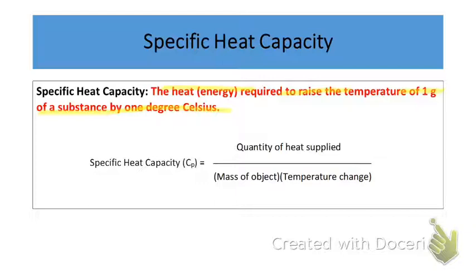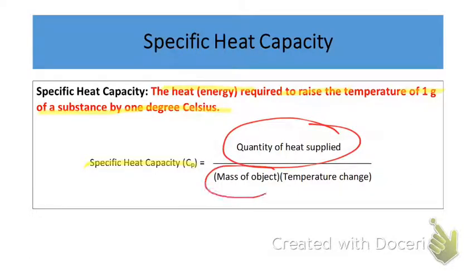If you have one gram of a substance, the specific heat is the amount of energy required to raise the temperature of that one gram by one degree Celsius or by one Kelvin. An equation for specific heat is given below. The specific heat, usually symbolized by C subscript P or just C, is equal to the quantity of heat supplied divided by the mass of the object times the change in temperature. That gives us the specific heat of a particular object.